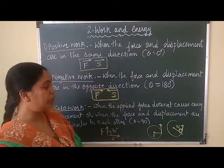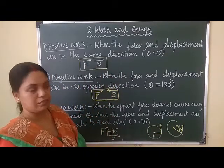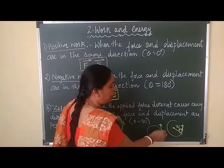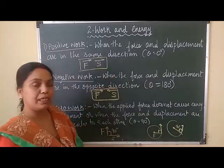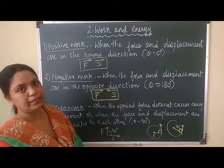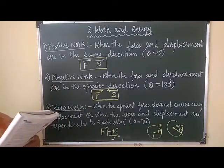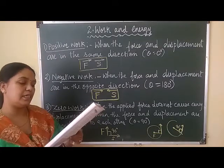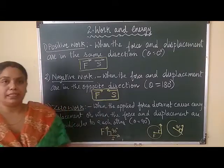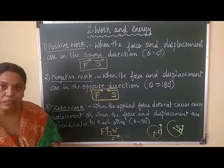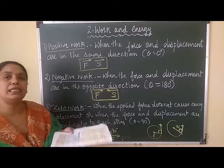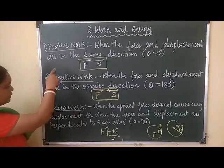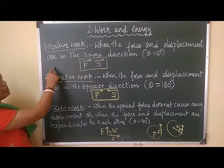Even a moving fan is doing zero work, because the angle between the direction of displacement and the centripetal force is 90 degrees. Then, walking up and down the staircase or climbing a tree — when force and displacement are in the same direction — that is positive work.